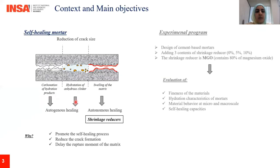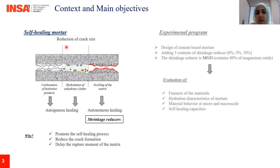Our main objective is to design a repair mortar having the ability to heal or to reduce cracks that may appear in the structure. The autonomous healing is our interest, where the matrix can form new products inside pores or inside the cracks, and therefore the swelling mechanism is possible, which could lead to the reduction of the crack size. Using shrinkage reducers in the mixture could promote this process and reduce crack formation, and also delay the rupture moment of the matrix.